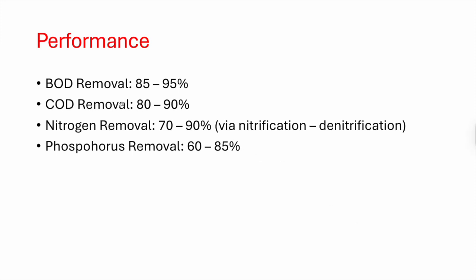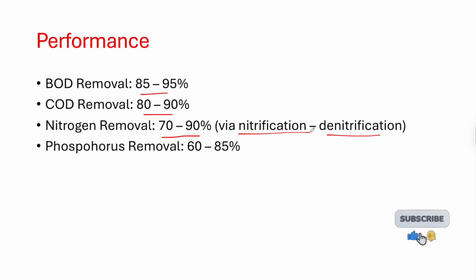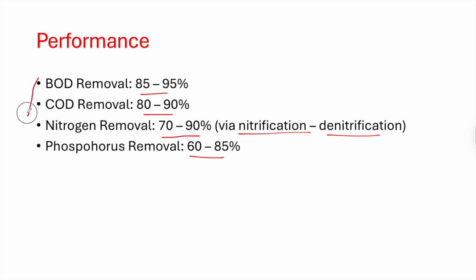Regarding performance, the SBR delivers BOD removal of 85–95%, COD reduction of 80–90%, nitrogen removal of 70–90% when proper denitrification during filling and nitrification during aeration are applied, and phosphorus removal of 60–85%. These are strong numbers, and the SBR is a very effective method when well designed.